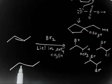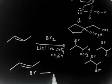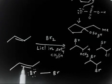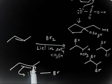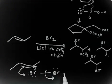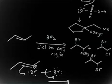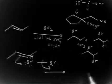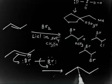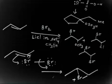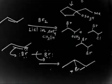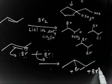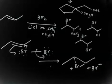The first step: Br–Br approaches the alkene. The electrons from the double bond attack one bromine, pushing the lone pair onto the other, giving Br⁻ and a bromonium ion — bromine with a positive charge — as the intermediate.